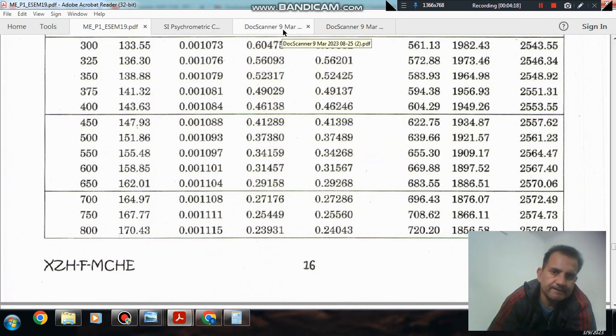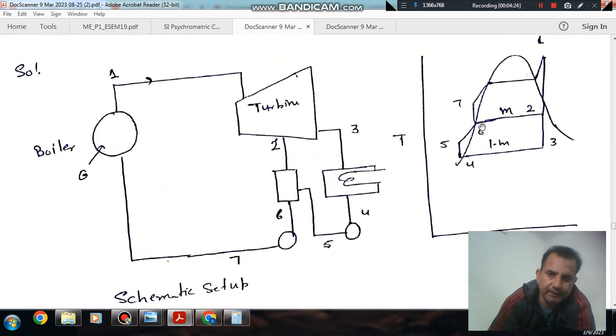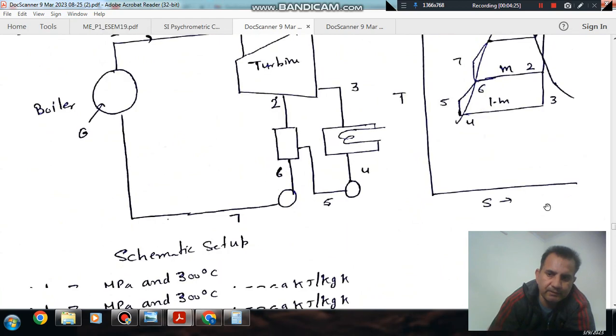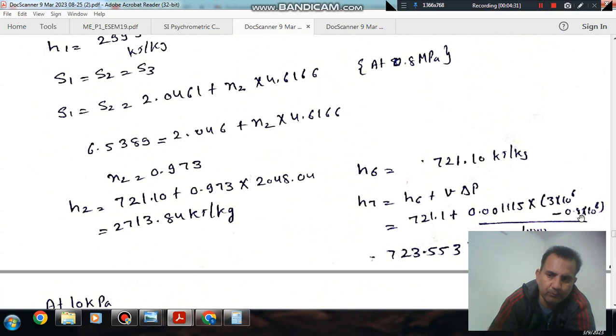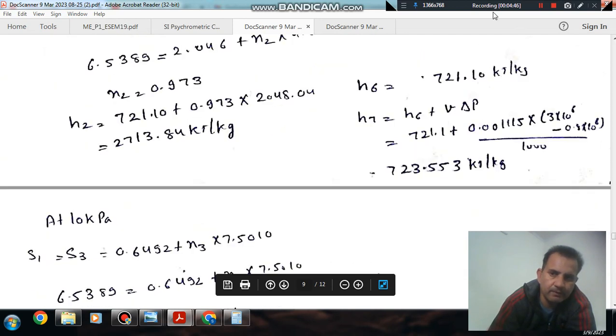Pump work is specific volume times pressure difference, which is 0.001 × (3 MPa - 0.8 MPa), converting units properly. Dividing by 1000 to get kJ/kg, we get H7 = 723.553 kJ/kg.